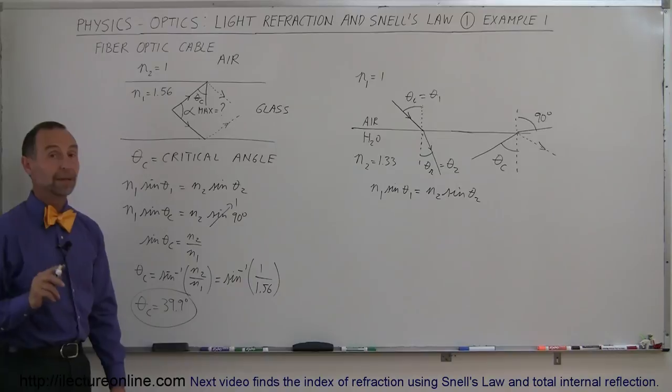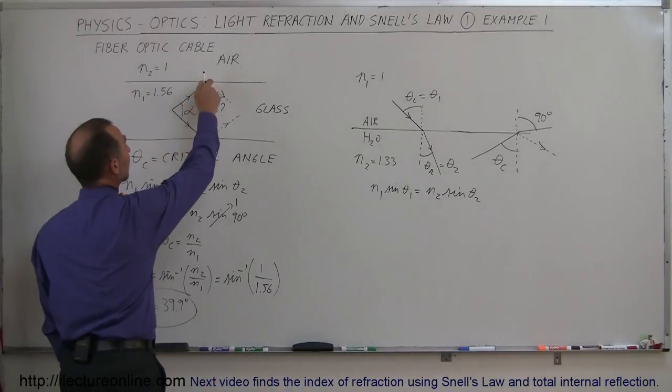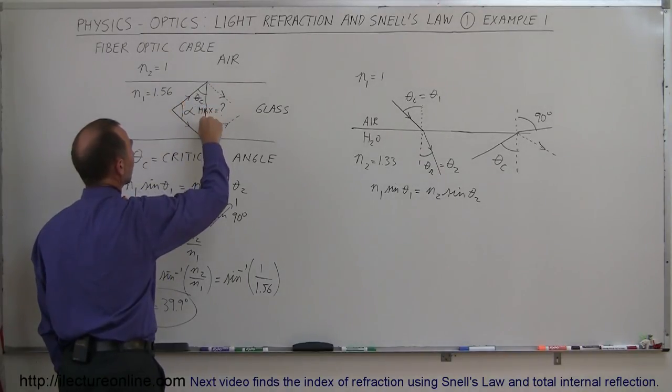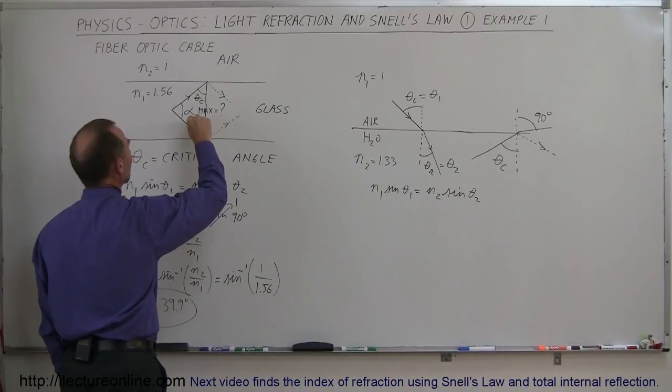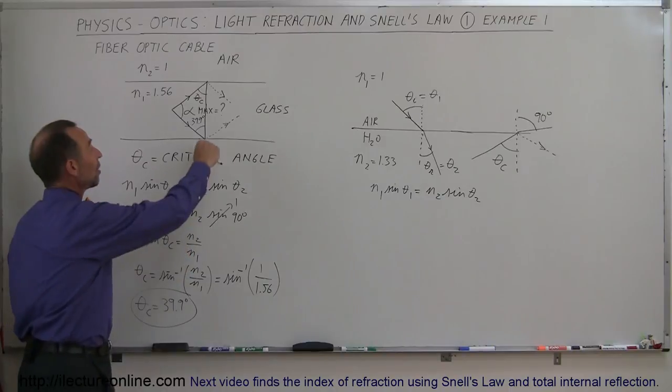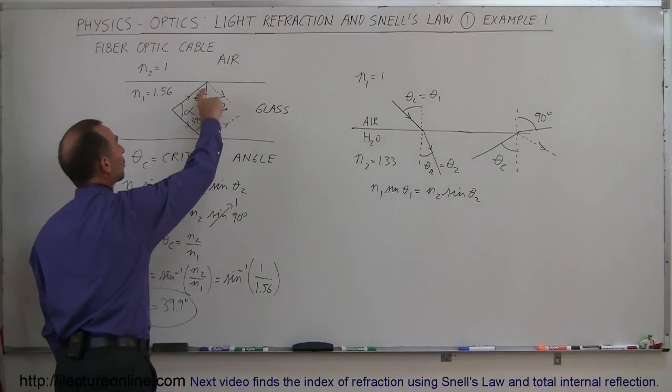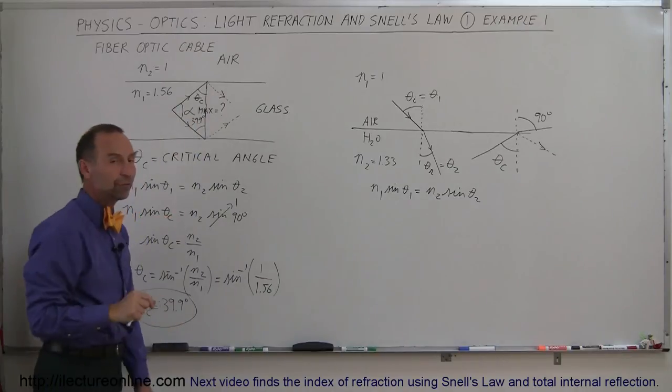So that means that this angle here is 39.9 degrees. If we go across here, that means this angle here must be 39.9 degrees, because that's also the critical angle. Which means that this now forms a triangle with 2 angles equal to 39.9 degrees and the angle that we're looking for.